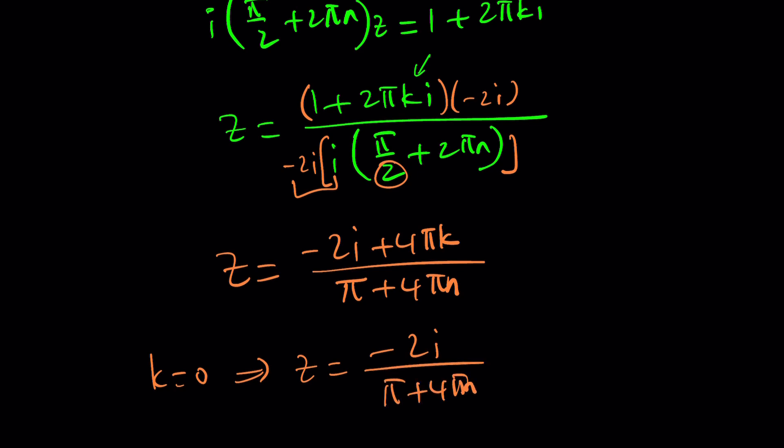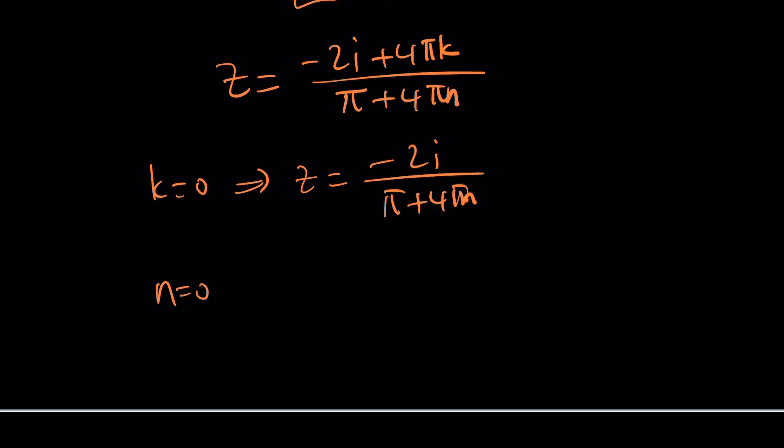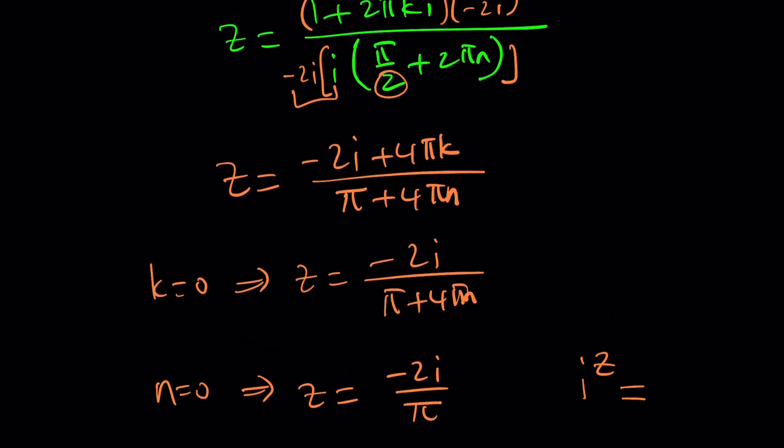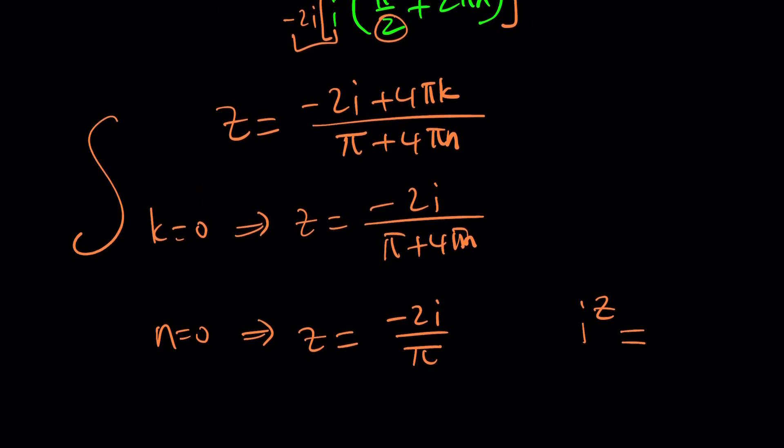So I have a feeling that k should be 0. If k is 0, then you get z equals negative 2i over pi plus 4 pi n. And if n is also 0, then you get the simplest form, negative 2i over pi. And guess what? This is something you can substitute into this equation and see if you're going to get e from here. Of course, you need to write i in polar form again. But if you go back to the first method, which one agrees with the first method? Again, I'm going to leave it as an exercise because this brings us to the end of this video.